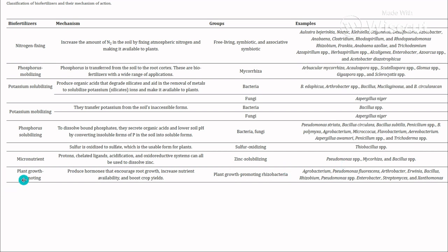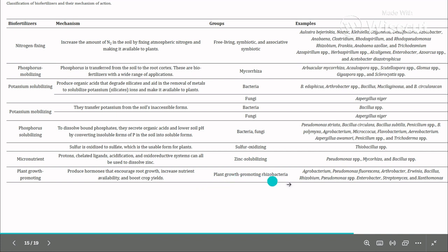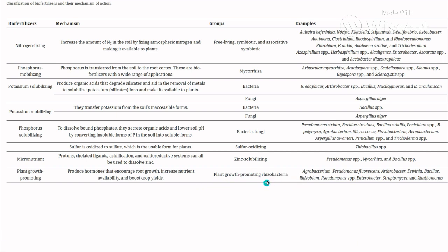Last in the list is plant growth-promoting biofertilizer. They produce hormones that encourage plant root growth, increase nutrient availability, and boost crop yield. Example: plant growth-promoting rhizobacteria (PGPR), which are present in rhizospheric soil. Examples include Agrobacterium, Pseudomonas fluorescens, Arthrobacter, Erwinia species, Bacillus, Rhizobium, Enterobacter, Streptomyces, and Xanthomonas.